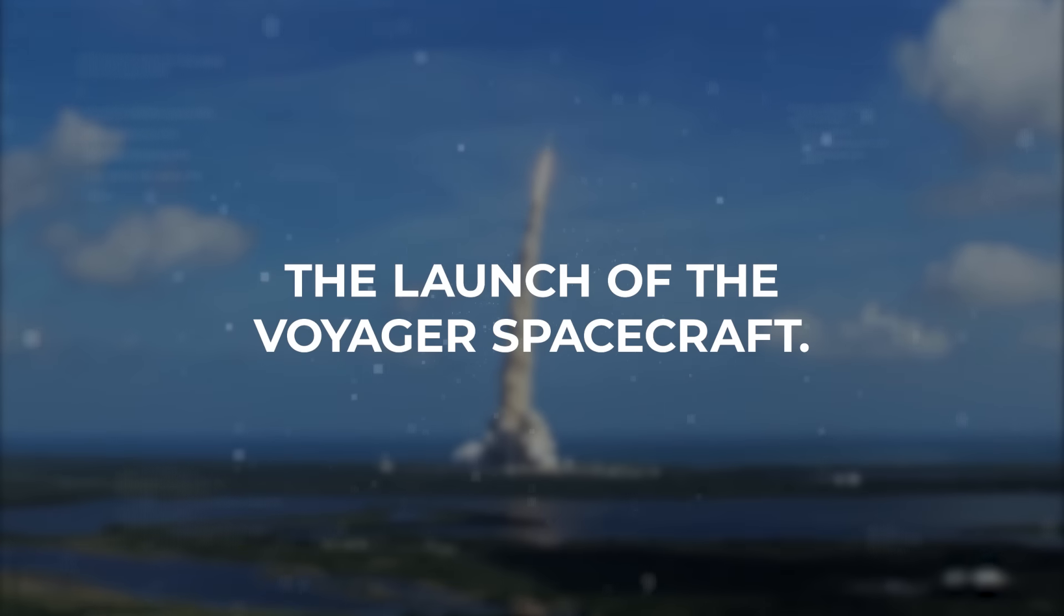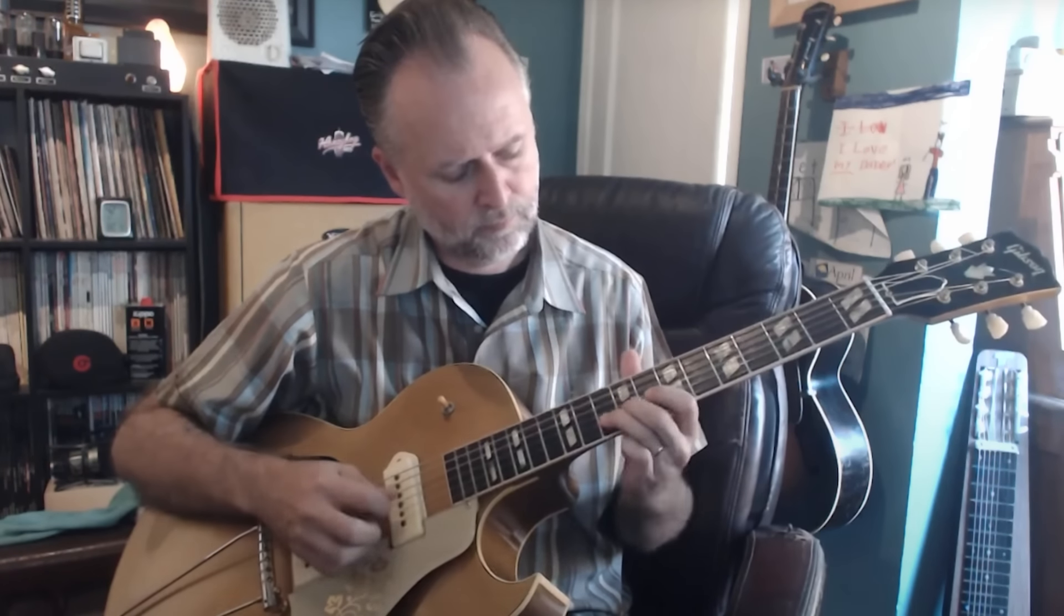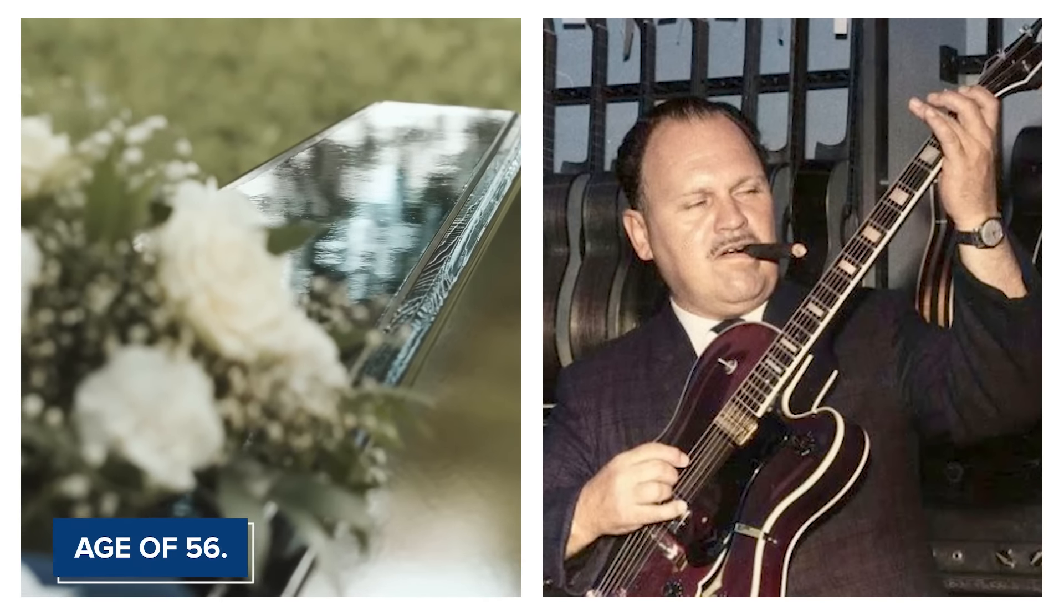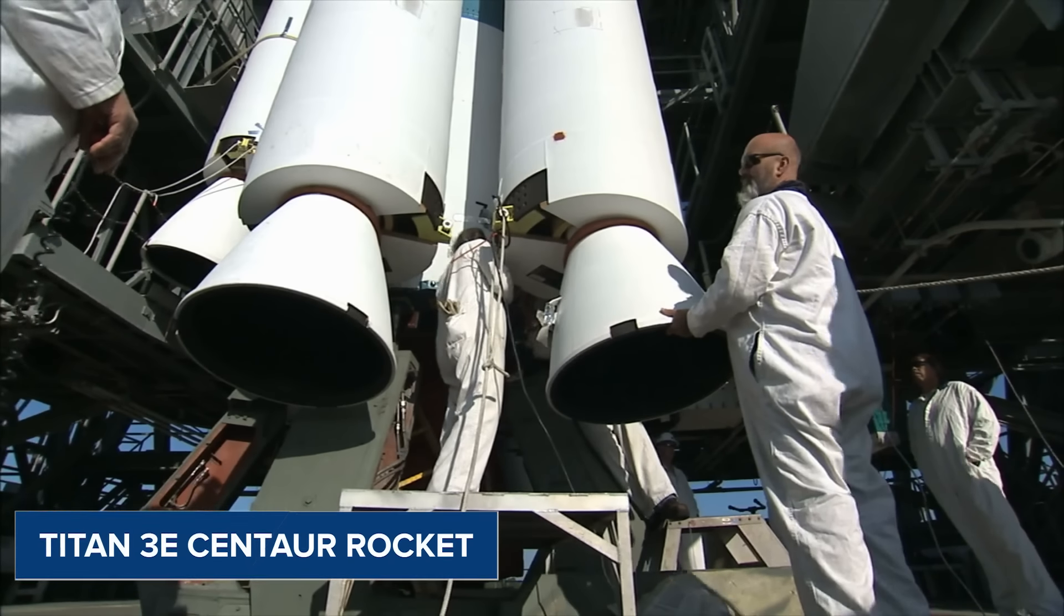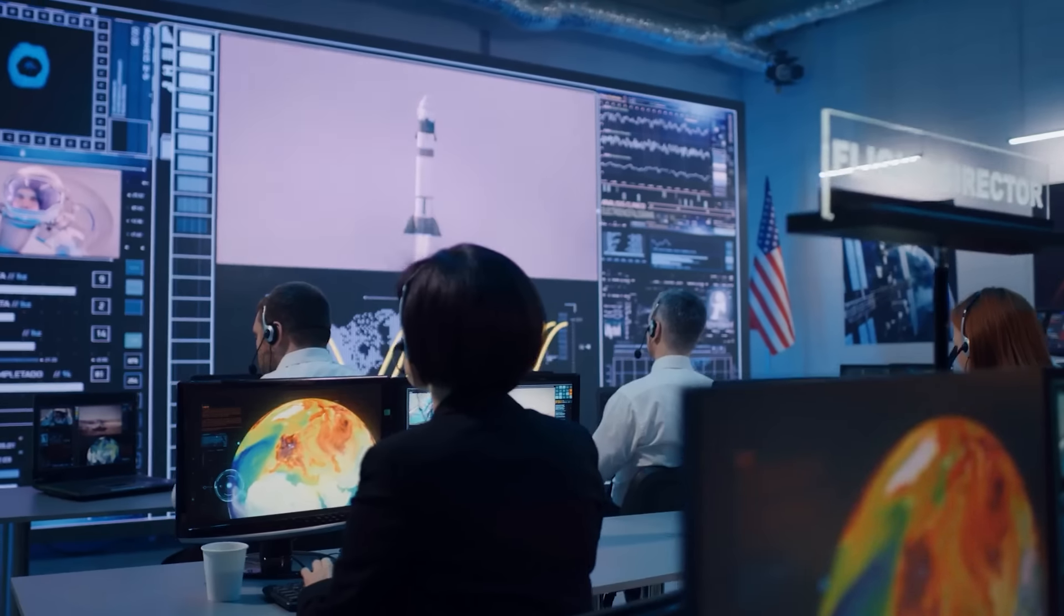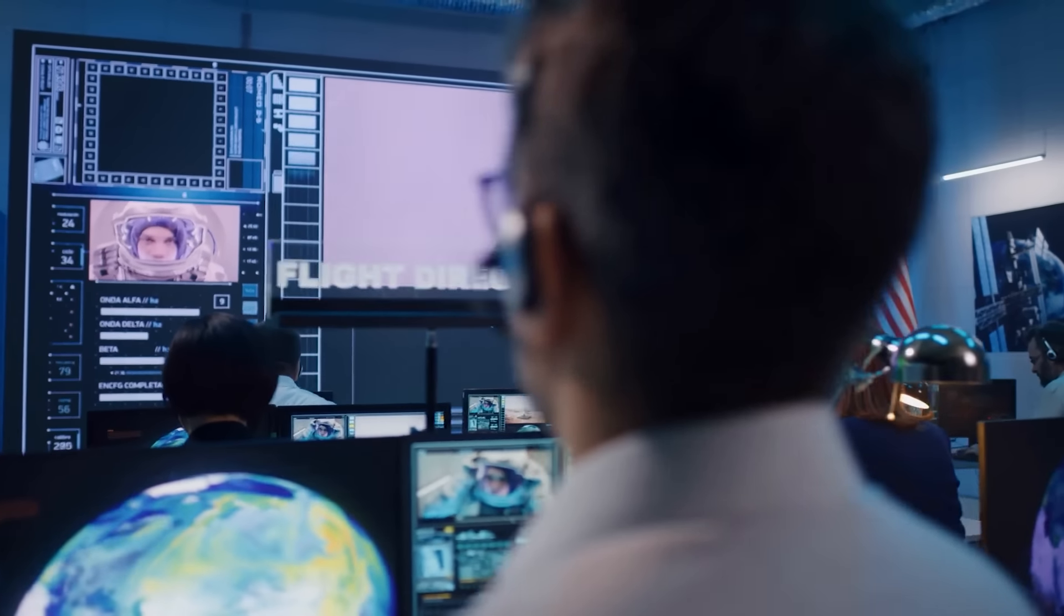The launch of the Voyager spacecraft. On September 5, 1977, the launch of Voyager 1 was one that really stood out. Launched from Cape Canaveral, Florida, using a Titan III e-Centaur rocket, it marked the beginning of an amazing journey. Just 13 days earlier, on August 20th, Voyager 2 started its mission.